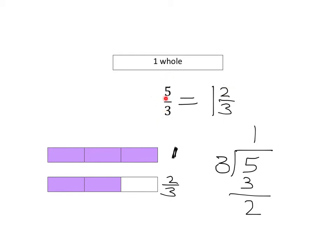3 goes into 5 once, we've got 1 lot of 3 in 5, and we have 2 little pieces left over, so 5 thirds is equal to 1 and 2 thirds.